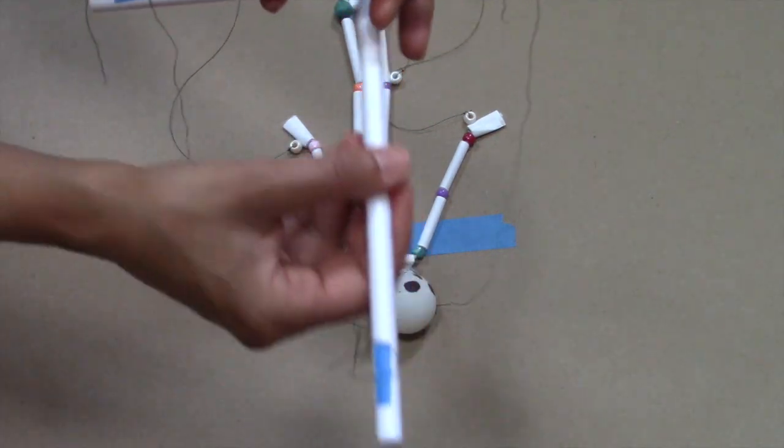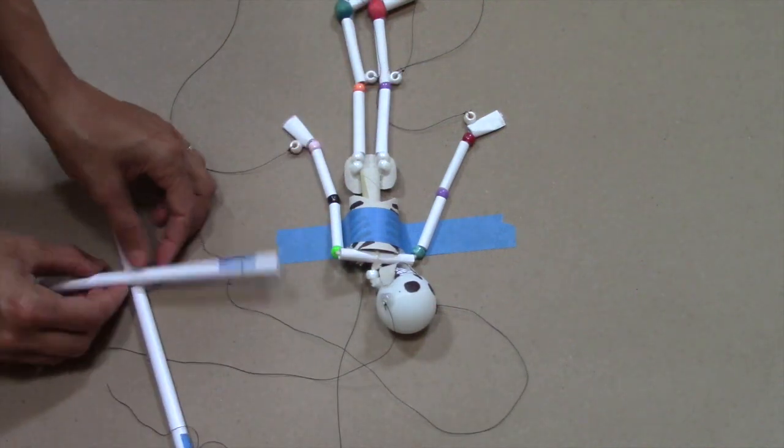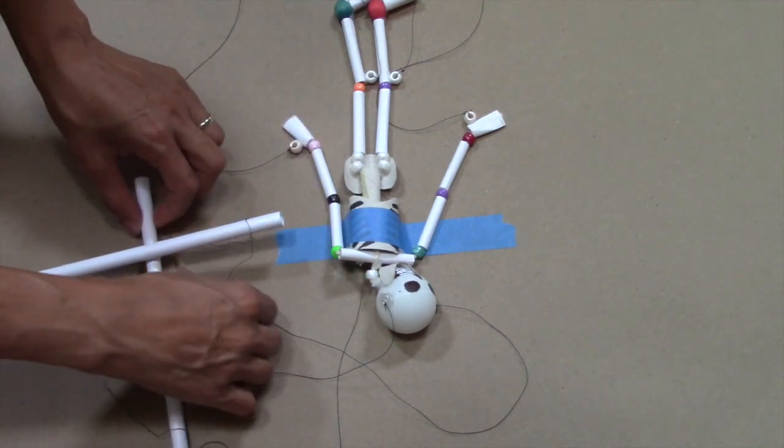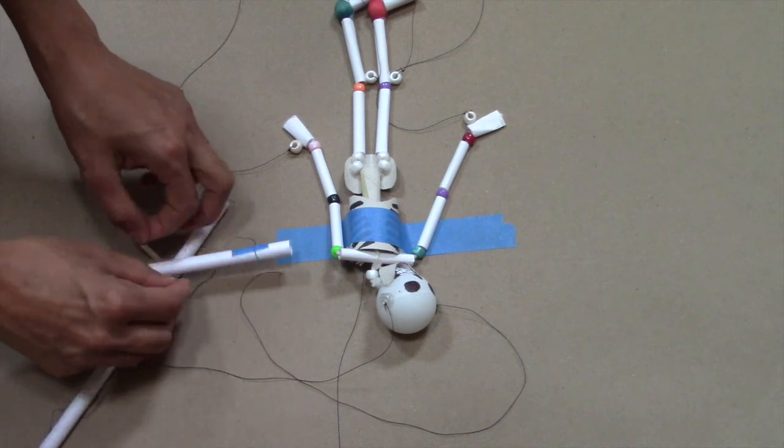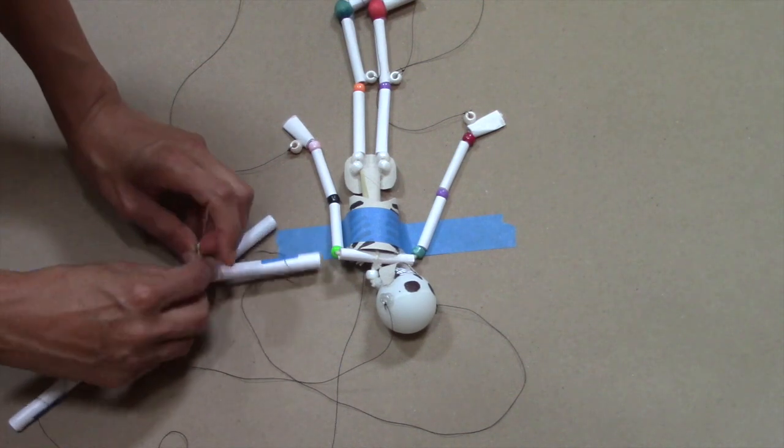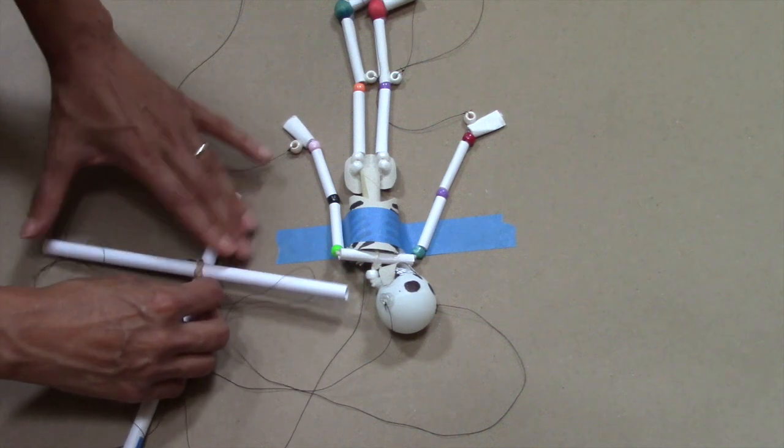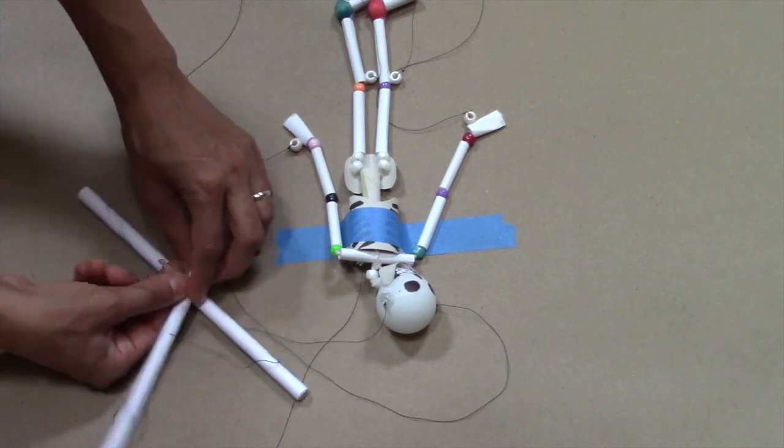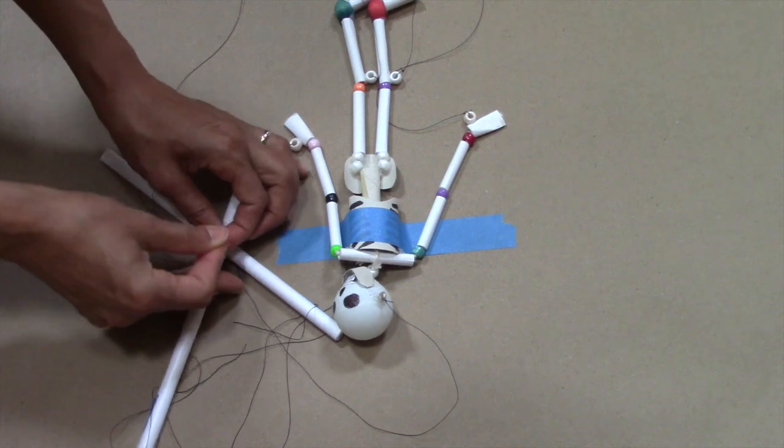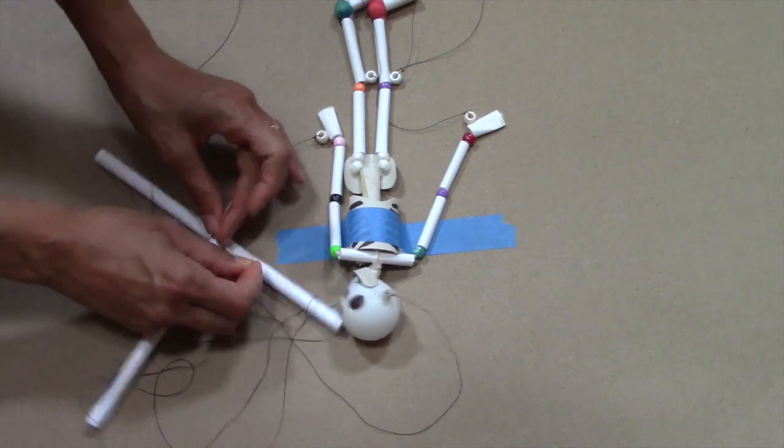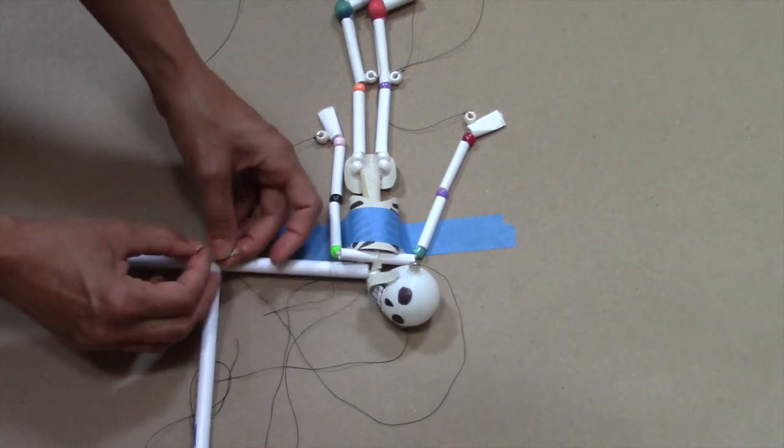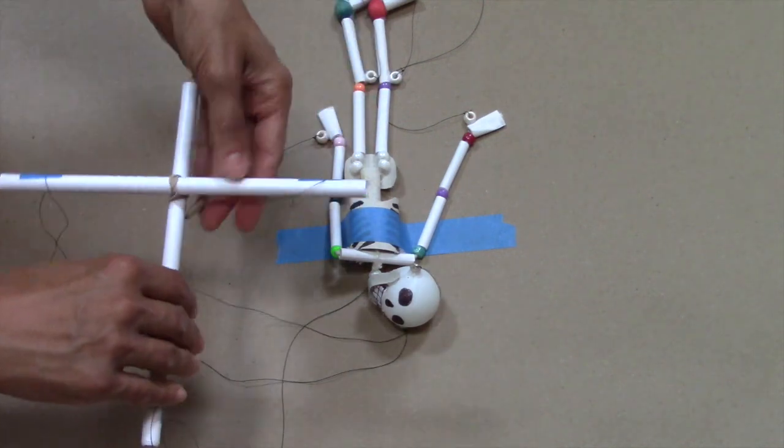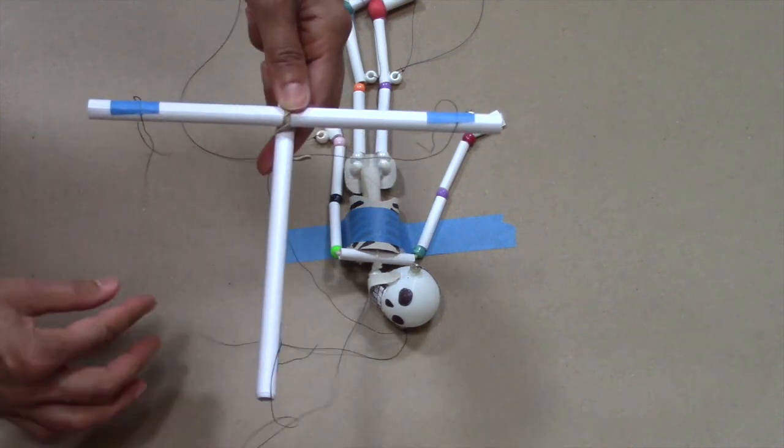Now you'll need to place the control rod that is attached to the skull crosswise on top of the rod that has the string to the skeleton's back. I'm using a rubber band to attach them, but a metal twist tie would be a lot easier. Once the rods are connected, adjust the control rods to make sure that the tape is facing the top.